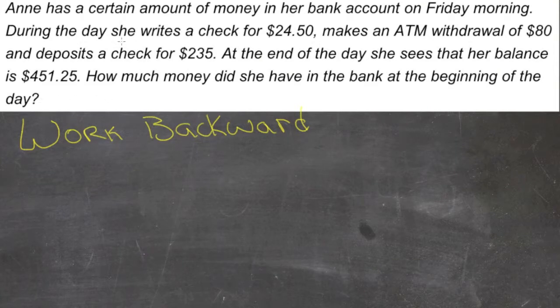Since we want to actually find out what happened earlier in the day, we want to work backwards given our final total. We know how much we ended up with. We want to know what we started with. So if we ended up with $451.25, and that was after depositing a check for $235, then before that, we must have had $235 less. So we're going to have to subtract $235.